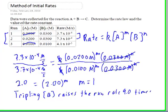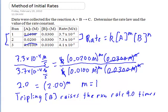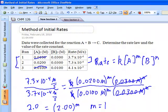What would we conclude from that? Simply that 9.0 is equal to 3 raised to the N power, and that means N is 2. So the reaction is second order with respect to B. We have a reaction that's first order with respect to A and second order with respect to B, and you can see this by the way the rates have changed as we alter the concentrations.